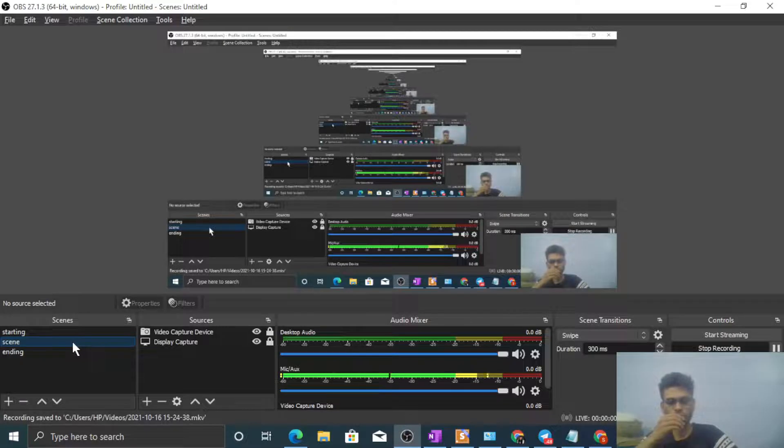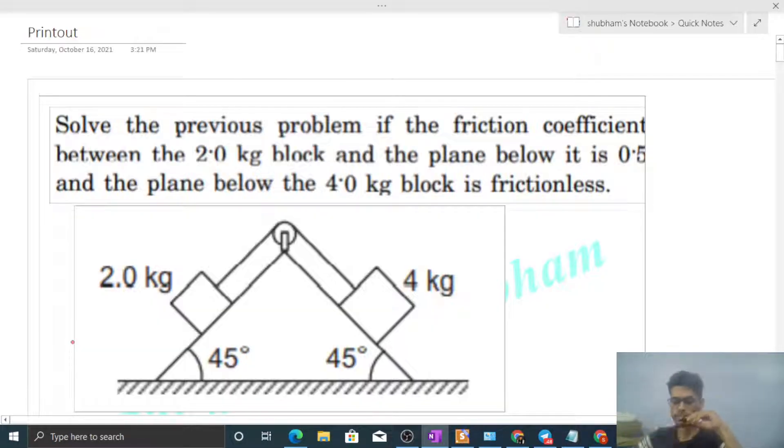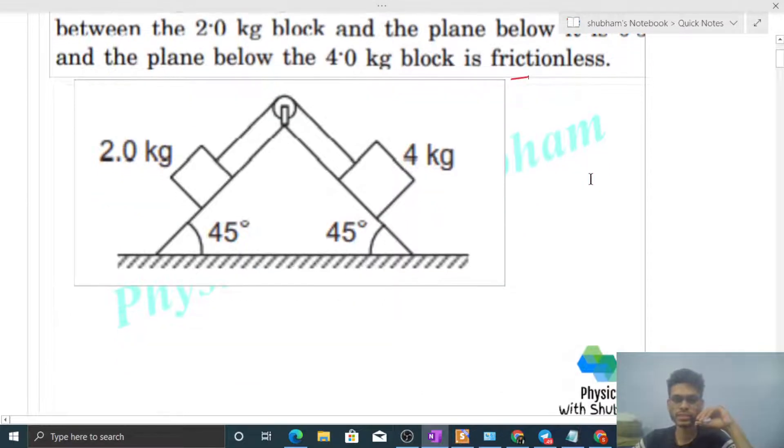Okay, hi everyone. Today let's discuss this interesting problem. Solve the previous problem if the friction coefficient between the 2 kilogram block and the plane below is 0.5 and the plane below the 4 kilogram block is frictionless. This previous part I have discussed very well.